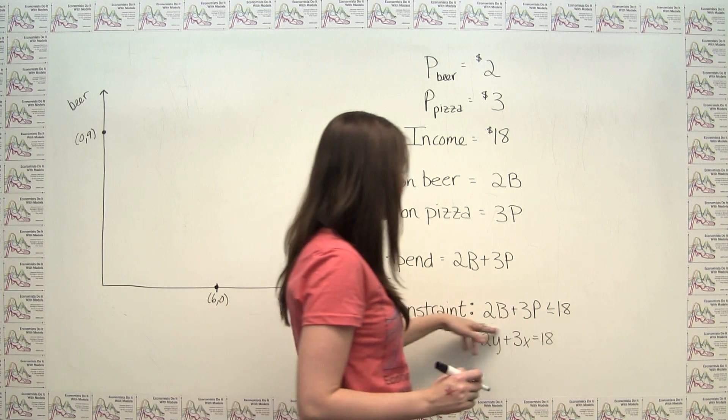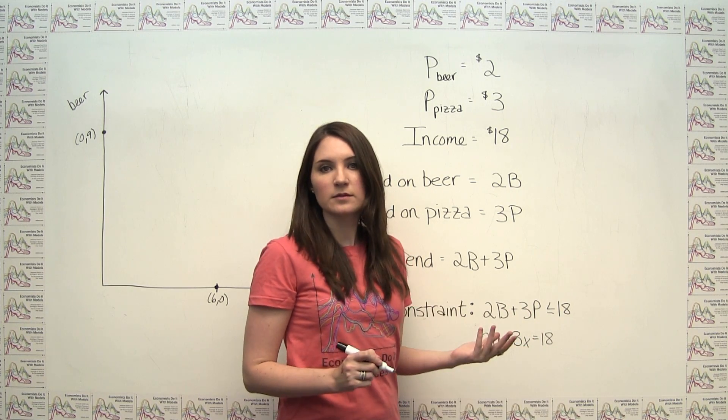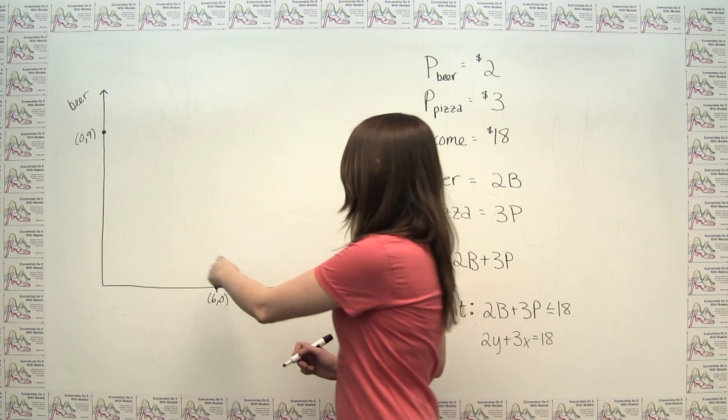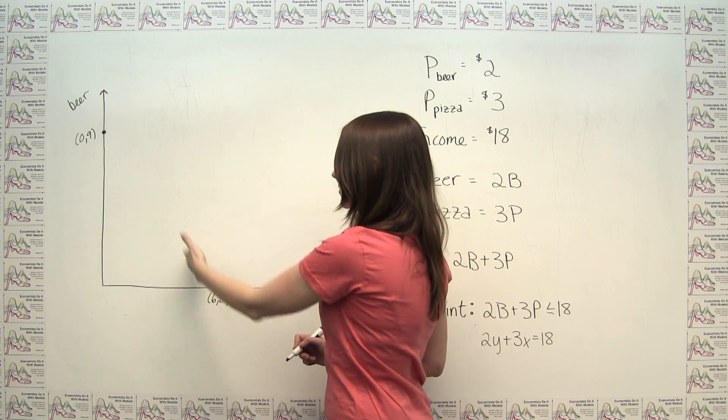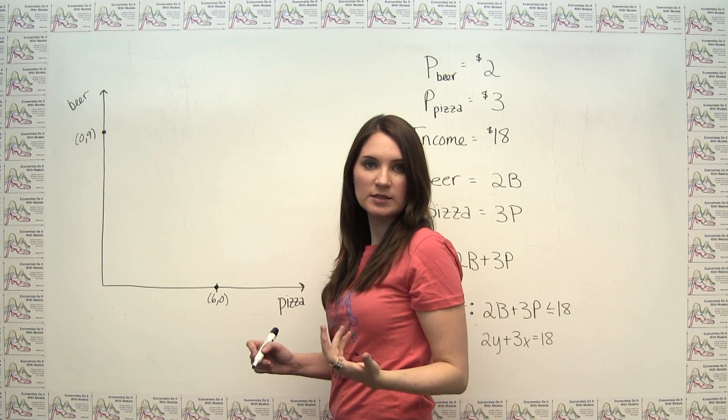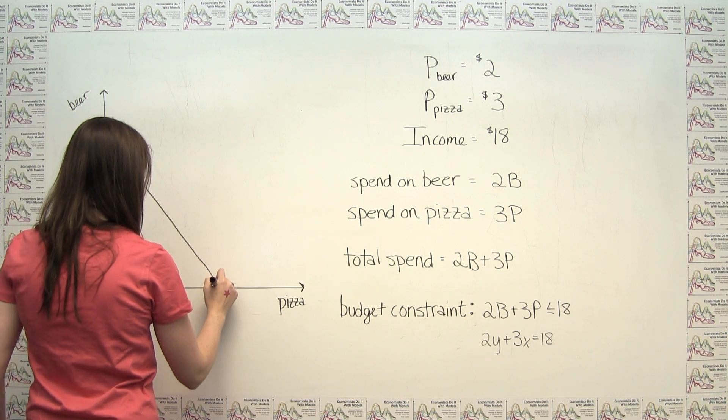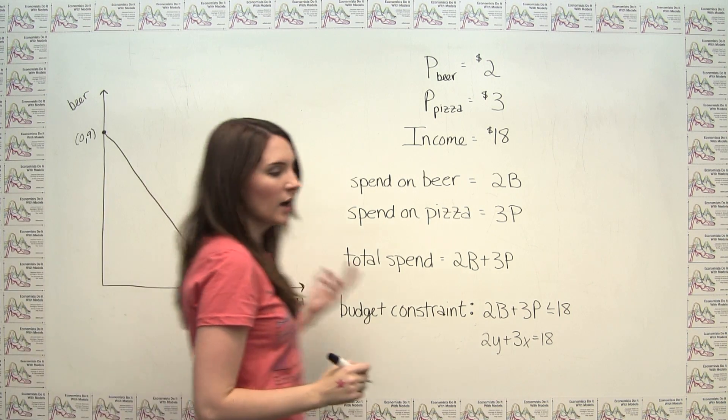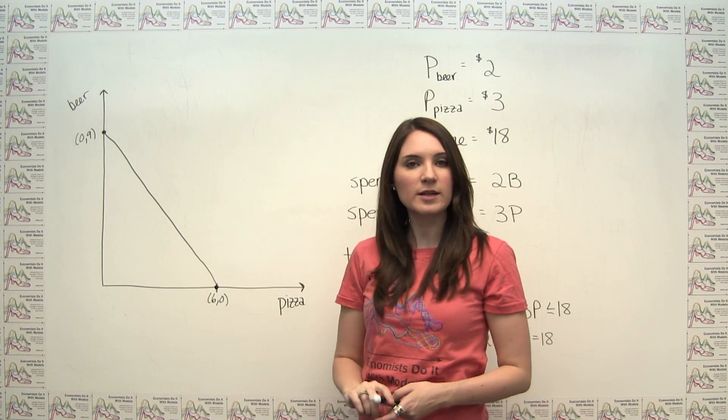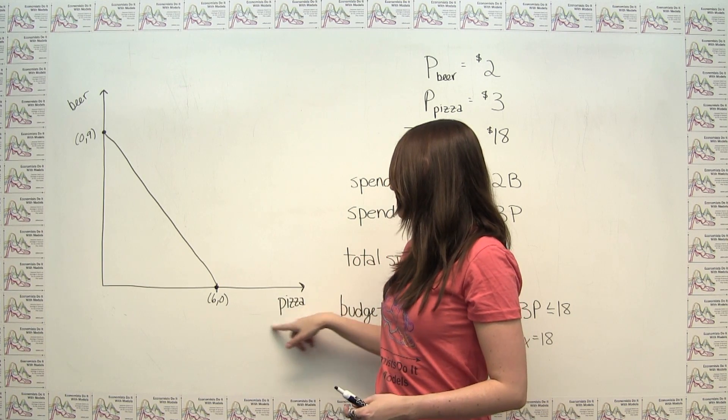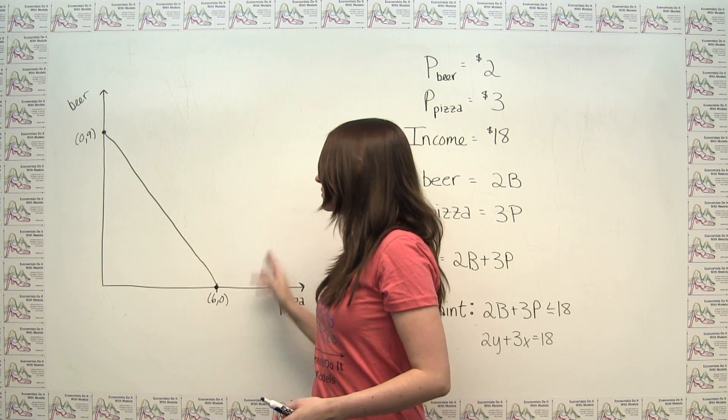The last thing we notice is that we know that this equation defines a line on our graph. So we know that any two points completely define a line, so we can continue making our budget constraint by just connecting the dots here. And we notice that although our line technically continues forever in both directions, it only makes sense to consider non-negative quantities of pizza and of beer, so we really only draw this part here.